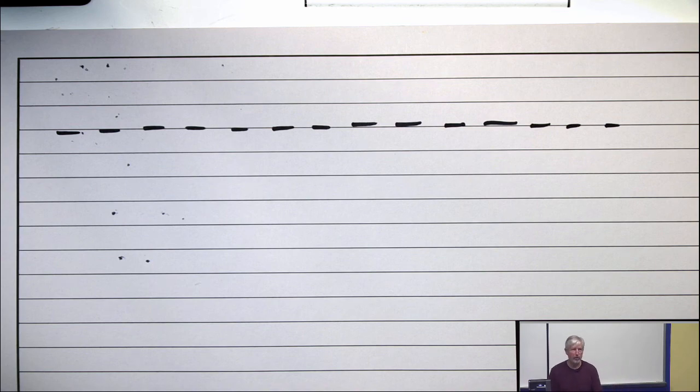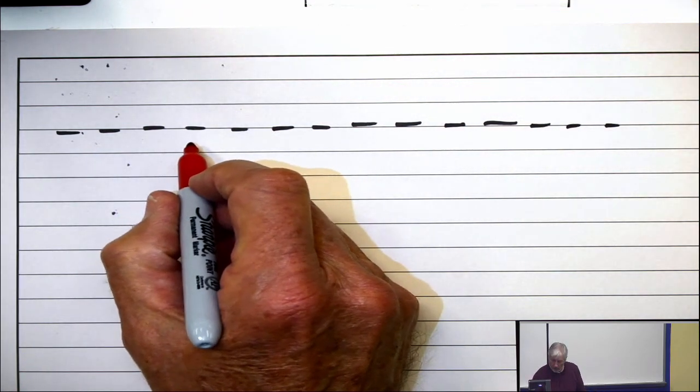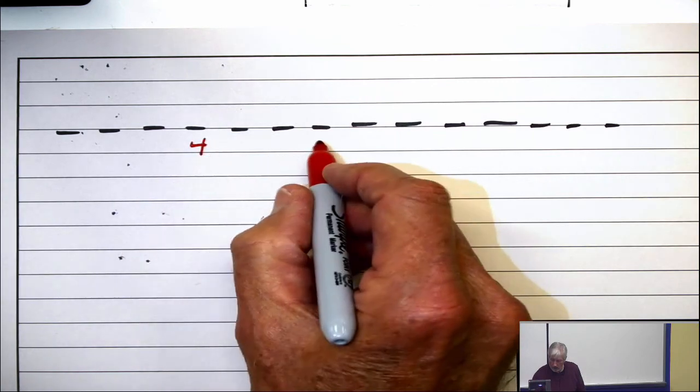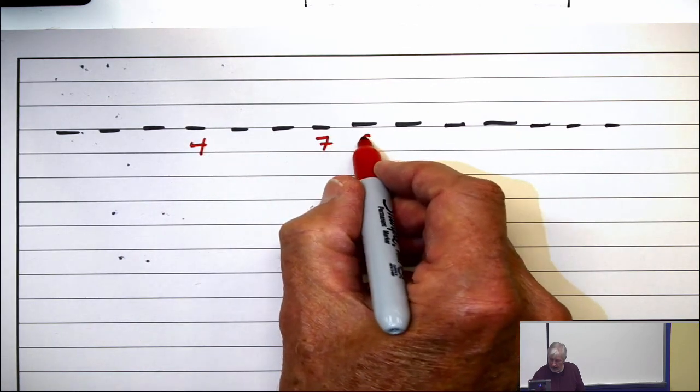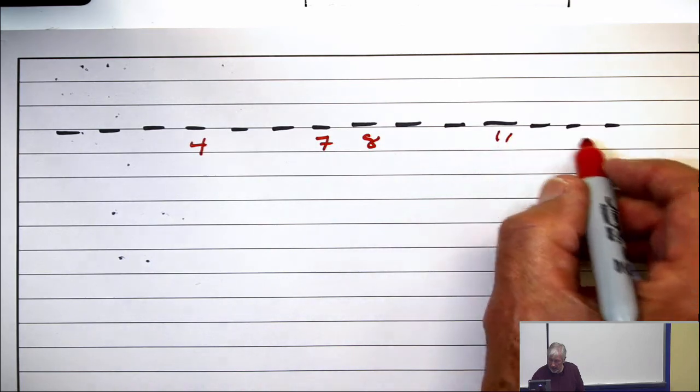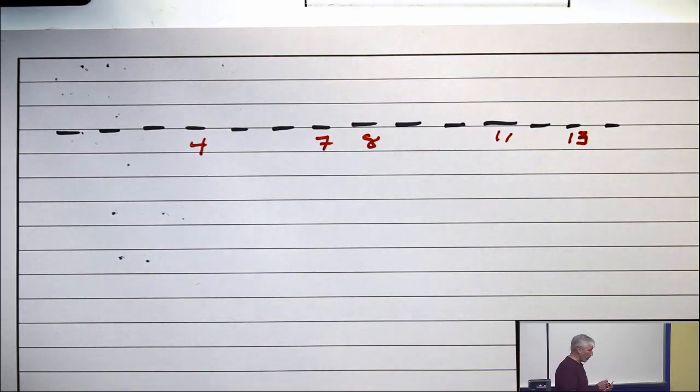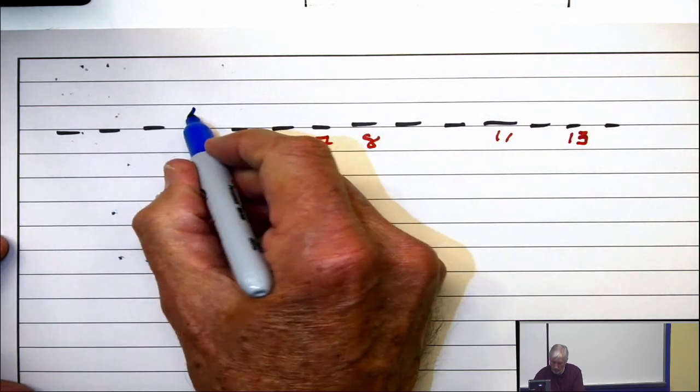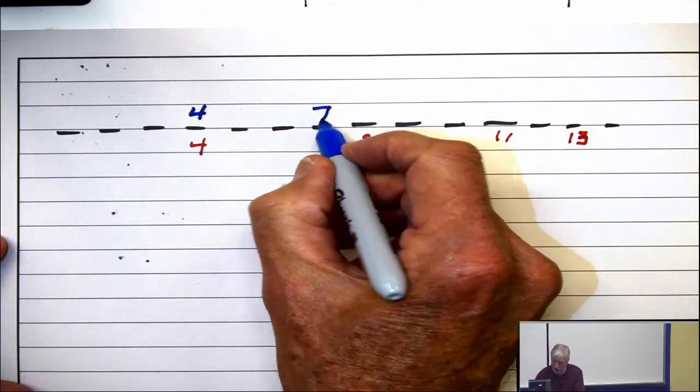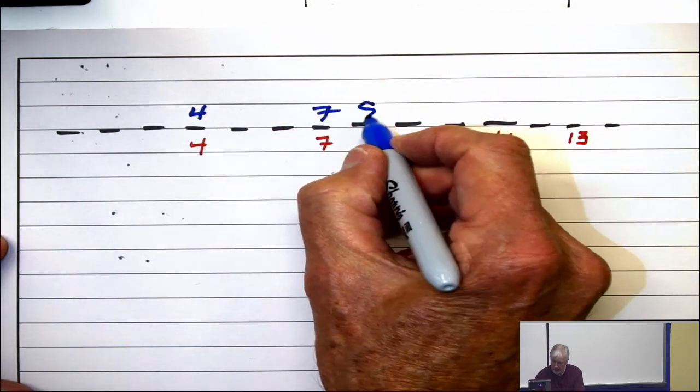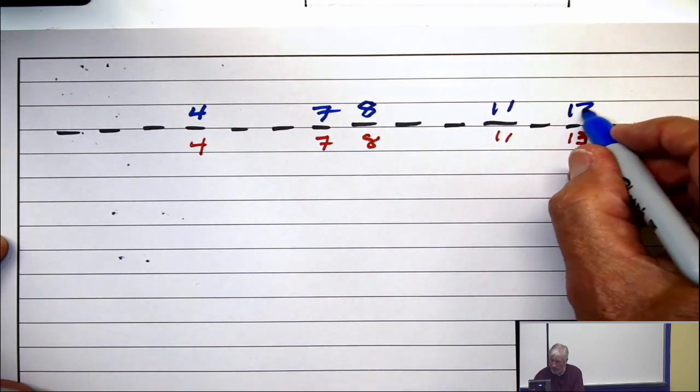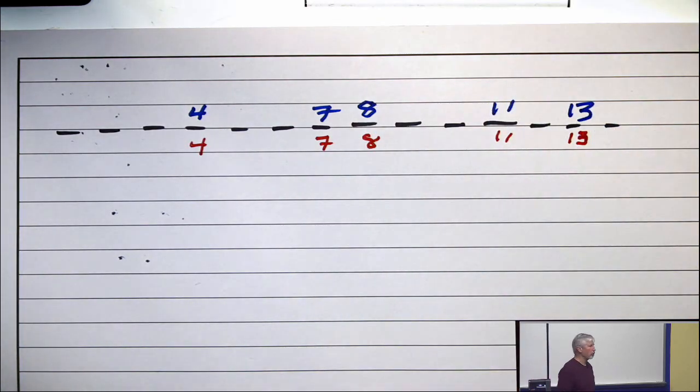But now, if I'm supposed to satisfy a certain set of properties. So I want to satisfy property 4, 7, 8, 9, 10, 11, and 13. Now, if I satisfy those properties, what does that mean? That means the permutation puts 4 in position 4, it puts 7 in position 7, 8 in 8, 11 in 11, and 13 in 13. That's what it means to satisfy those properties.